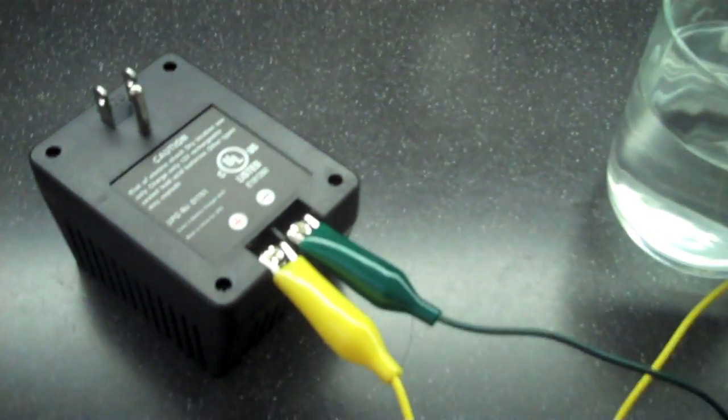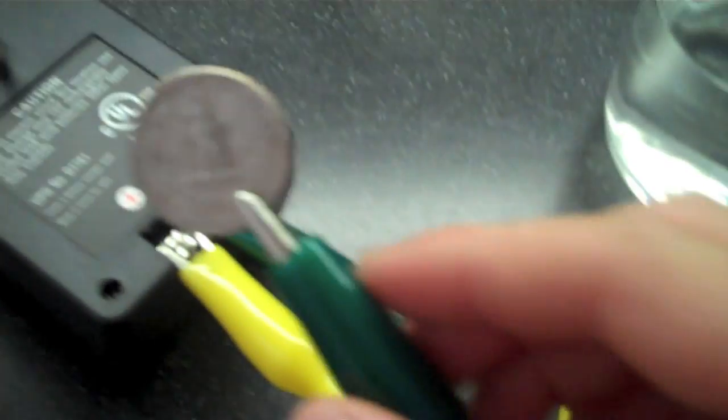Make sure that you have the positive lead of your power source going to the piece of copper, and the negative lead of your power source going to the metal you want to plate.